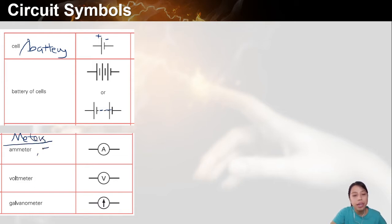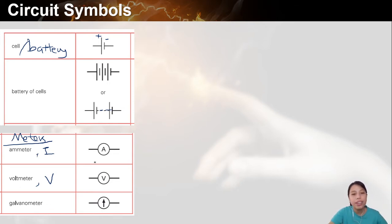The ammeter measures current. The voltmeter measures potential difference across two points. There's a galvanometer too, but we'll ignore that for now.